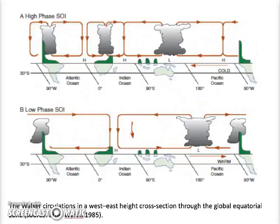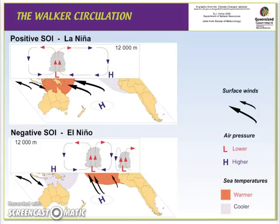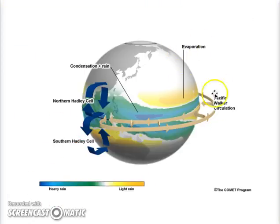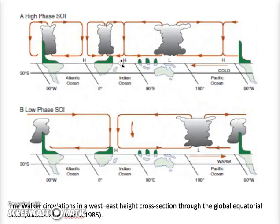Last video we talked about the zonal circulation, and we continue to wrap it up. We talked about the Hadley cells, Ferrel cell, and the westerlies. Here is another image to show the La Nina and the El Nino Walker circulation.